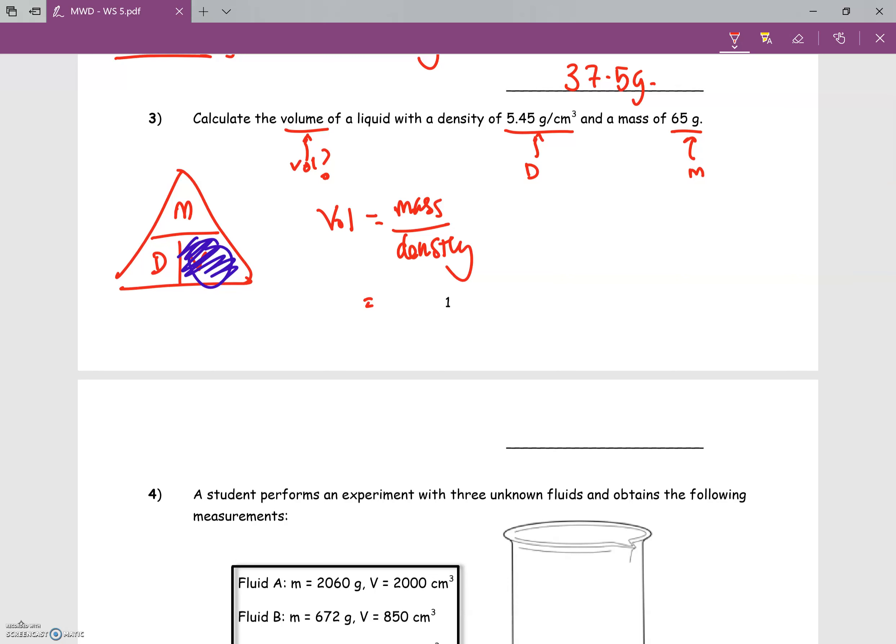Now, with the mass of 65 g and the density of 5.45, the volume we get from the calculator is 11.926.